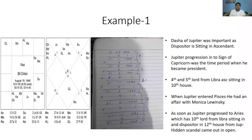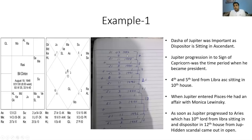Now let's look at example number one — the chart of American President Bill Clinton. We are considering the Jupiter dasha. Jupiter's dasha started on 21/07/1927 (progressed chart reference). Jupiter stayed in the sign of Libra for one year and four months, till 21 November 1988, then moved to Scorpio, Sagittarius, Capricorn. This is a very easy calculation. The Jupiter dasha was important because its dispositor is sitting in the ascendant.